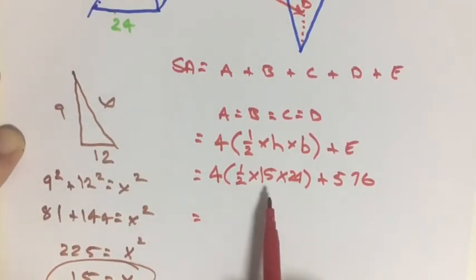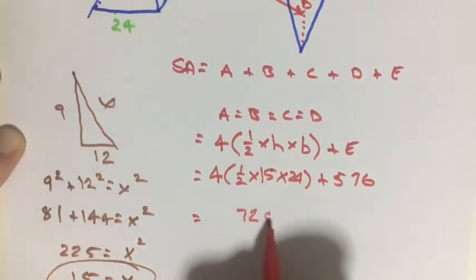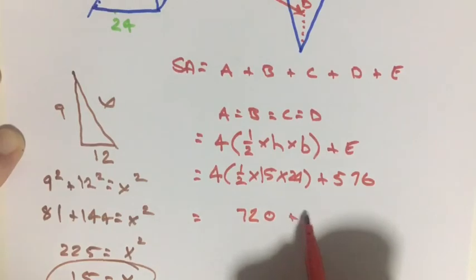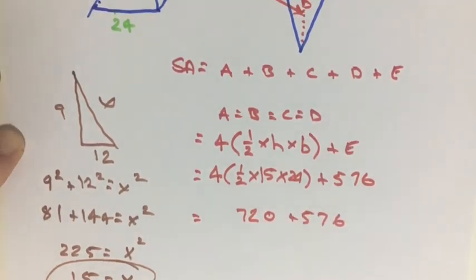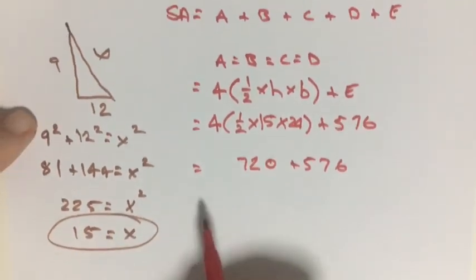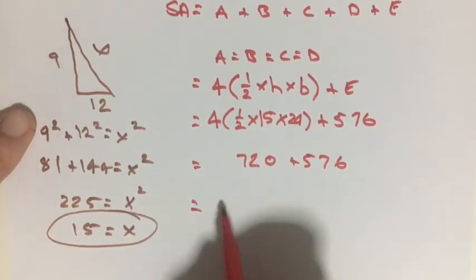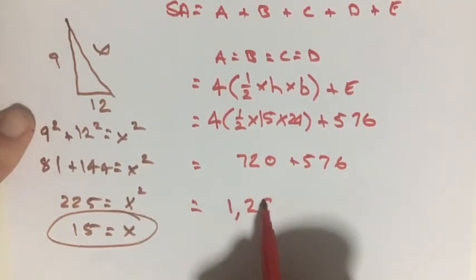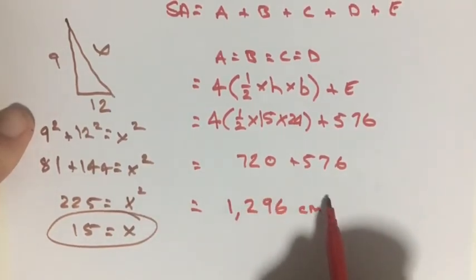So if we work this out, 4 times 1 half times 15 times 24, that's going to come out to 720 plus our 576. And that's going to be equal to 1296 centimeters squared.